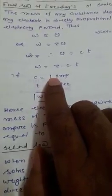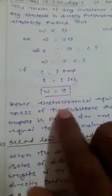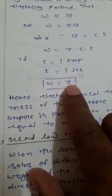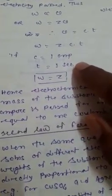If the current is equal to 1 ampere and time equal to 1 second, then W equal to z. So, we can define the electrochemical equivalent. The electrochemical equivalent equals the weight of any ion deposited when 1 ampere current is passed in 1 second.